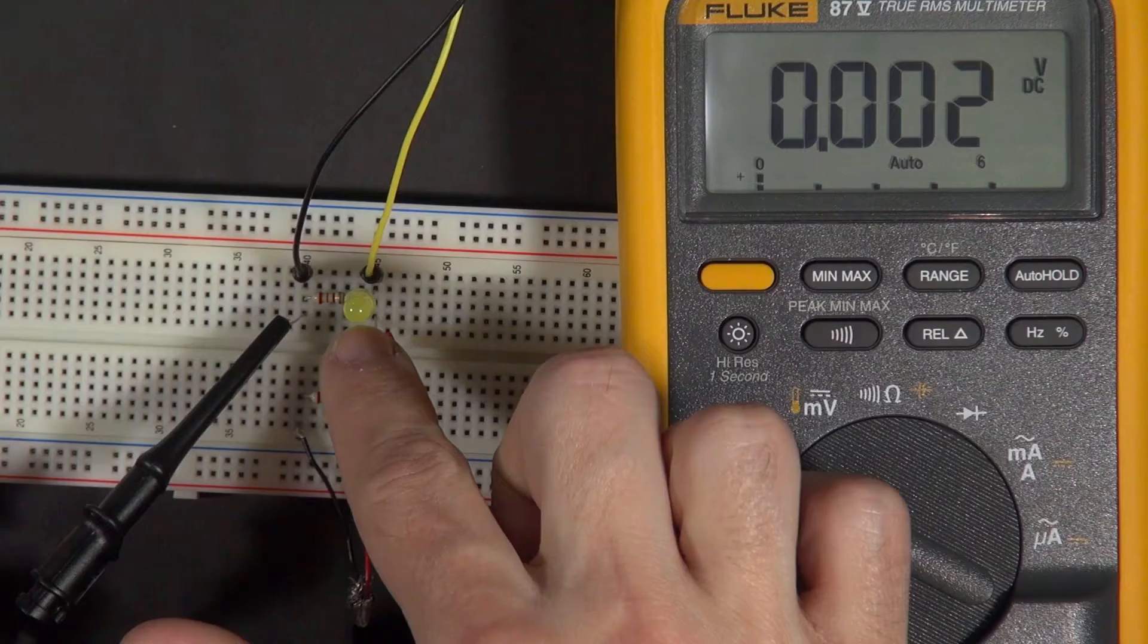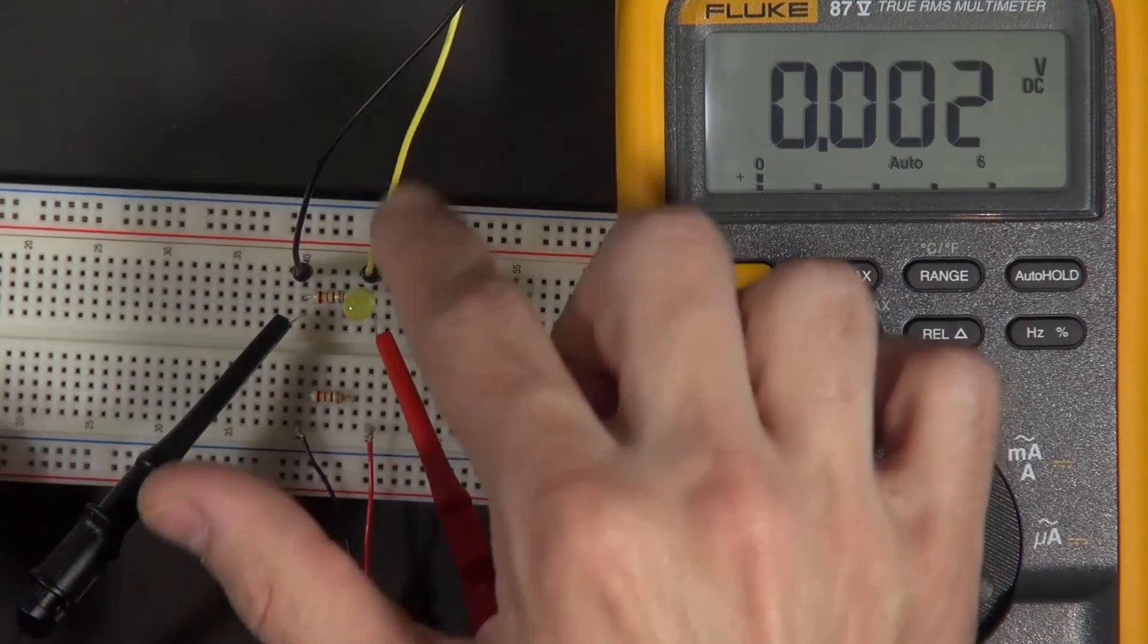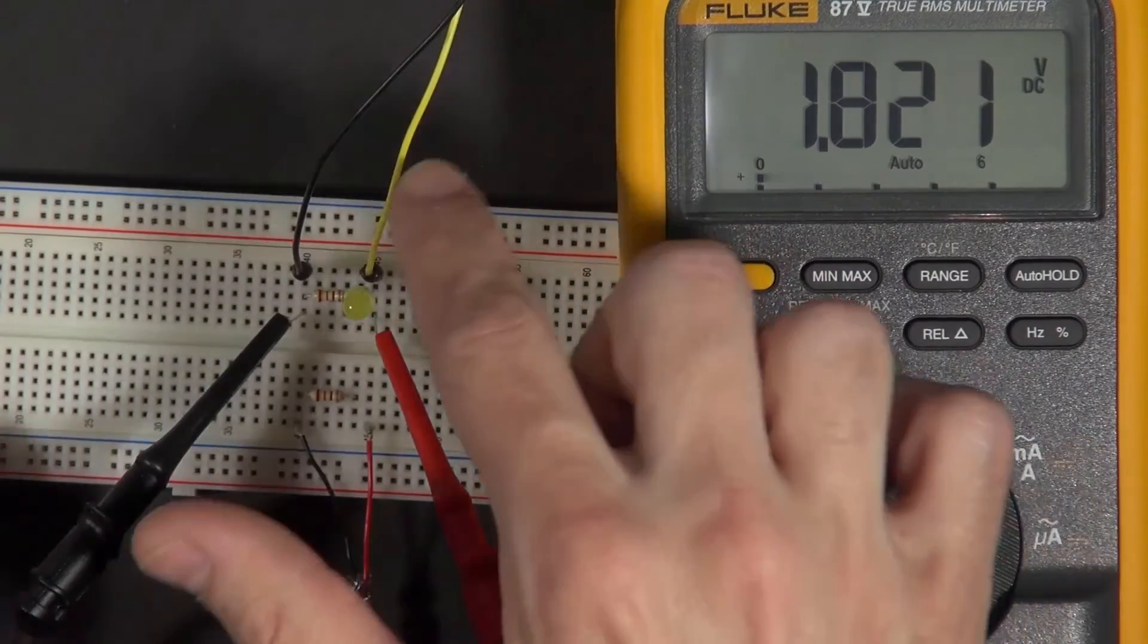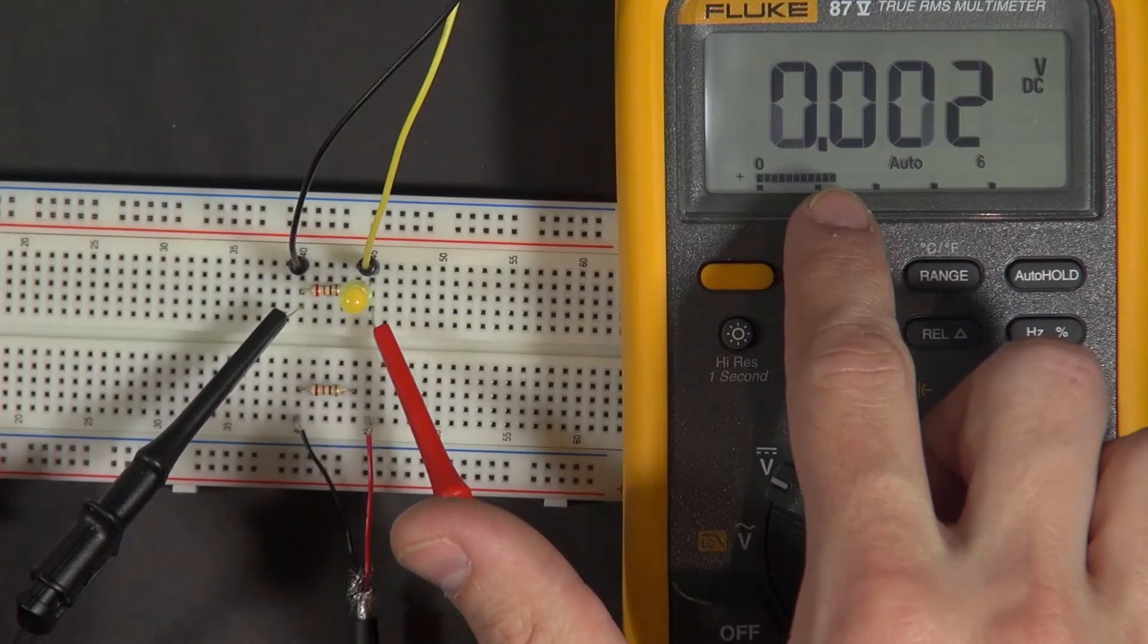The LED ends up not being very bright. And when the LED does draw that much current relative to what this can provide, this can't even maintain the 5 volts anymore. That's why we see the voltage is so much less.